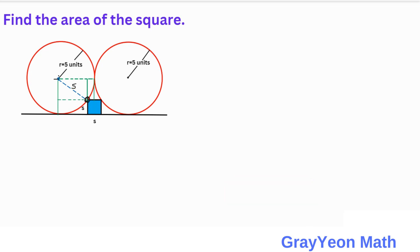And this projected length is, if this is S, then this is actually 5 minus S. And if this is 5, which is the radius, this is actually 5 minus S over 2.